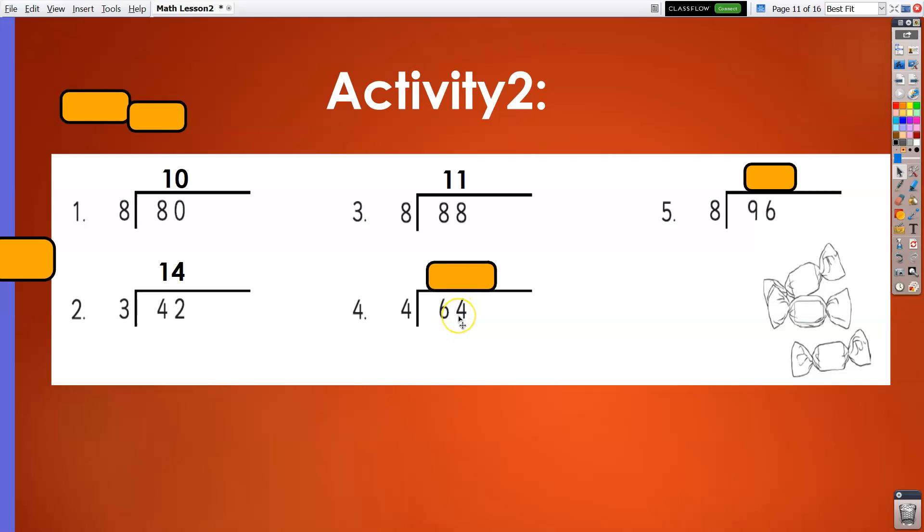Now we got 24, 24 divided by 4 is 6. And finally, 96 divided by 8: 9 divided by 8 is 1, carry over 1 or the remainder 1. Then we got 16. 16 divided by 8 is 2, therefore the answer is 12.